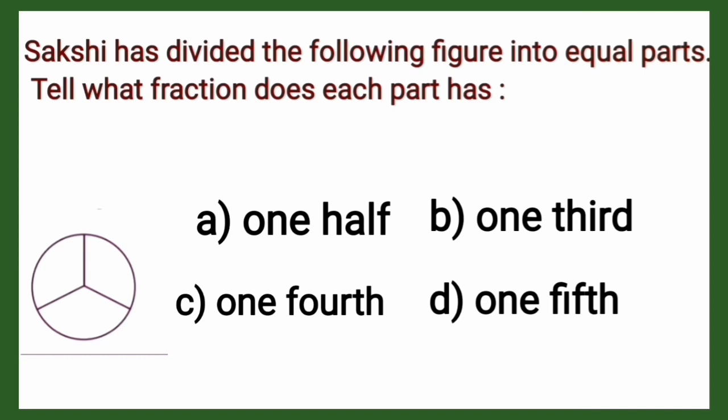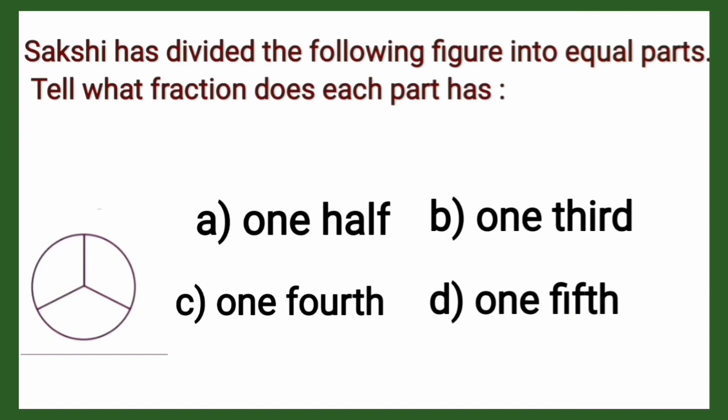These three parts become our denominator, and the fraction for one part is 1/3. Option A is one-half, which is 1/2 — incorrect. Option B is one-third, equal to 1/3, meaning one part out of total three parts. That is the right option.